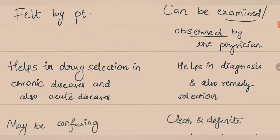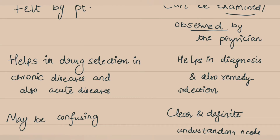Subjective symptoms help in drug selection, specifically in chronic diseases and sometimes in acute diseases. The reason I specifically mention chronic diseases is because they help in constitutional determination — determining the constitution of the patient. For example, some subjective symptoms like inability to bear anything tight on the body are commonly seen with only certain drugs, or symptoms like inability to bear exposure to sunlight, or aggravation from eating sour food. These are symptoms that cannot be examined by the physician; they can only be experienced and explained by the patient.